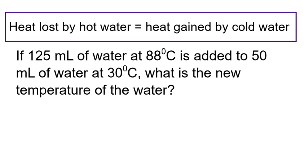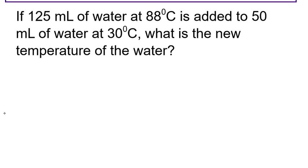This next problem is a little more complicated. We have two different water solutions: hot water mixing with cold water. There's 125 mL of water at 88°C and 50 mL of water at 30°C. Heat lost by the hot water equals heat gained by the cold water. When they mix, there should be an exchange of energy — the cold water warms up, the hot water cools down, and the entire system ends up at a single final temperature.